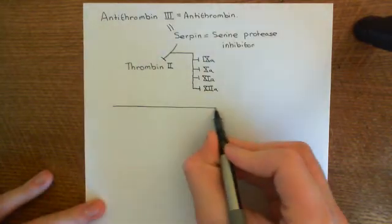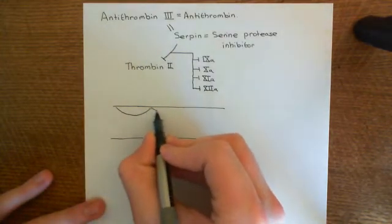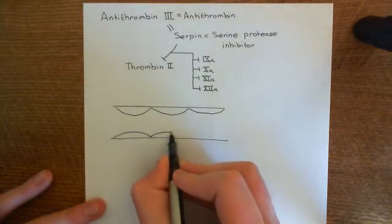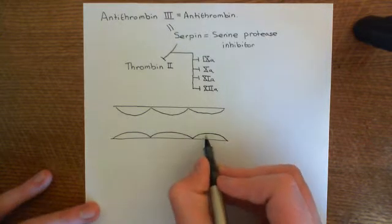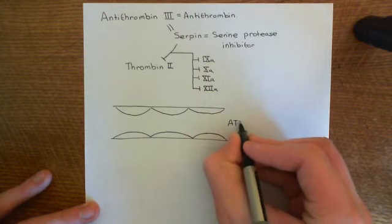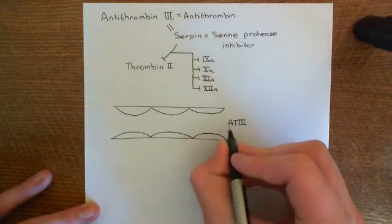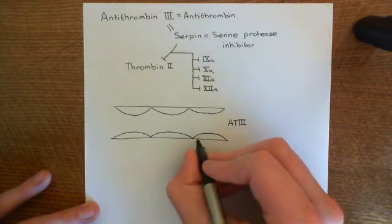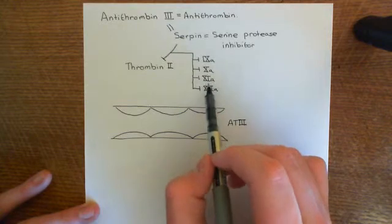In our blood vessel, the lumen is lined by endothelial cells. These endothelial cells have a polysaccharide on their surface which binds to antithrombin-III — often denoted as AT-III. Antithrombin-III is produced in the liver and dumped into the bloodstream, but it is not activated until it binds to this polysaccharide on the surface of endothelial cells. Once activated, it will inhibit thrombin and factors 9A, 10A, 11A, and 12A.